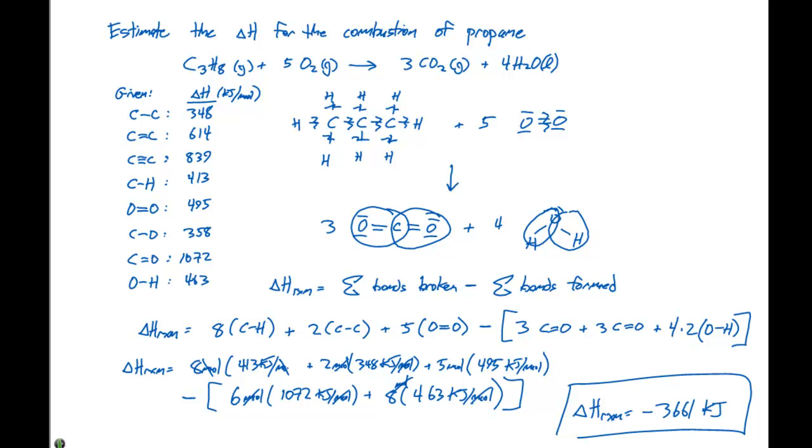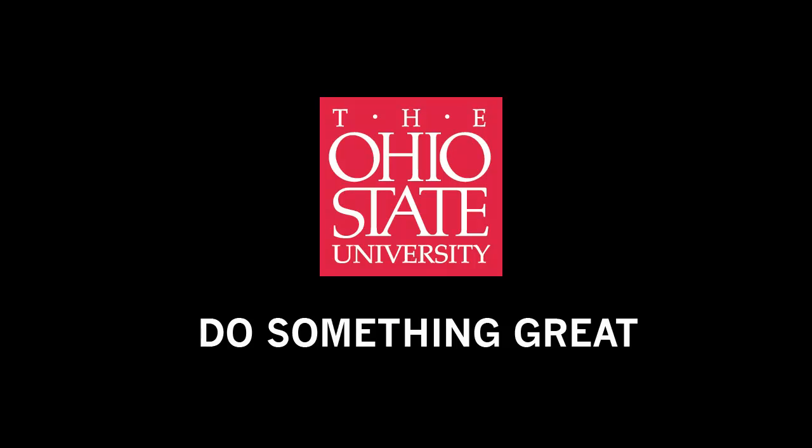When bonds form, they become more stable and lower in energy—that's why the negative sign is there. Then we add up all the components, do the algebra, and determine the delta H of the reaction.